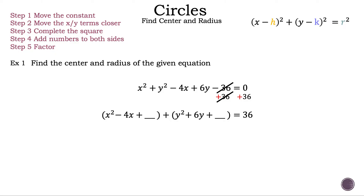Now let's complete the square for our x quadratic. First we need to find the b term, which is negative 4. We need to divide negative 4 by 2 and square it. Negative 4 divided by 2 is negative 2, and negative 2 squared is 4. Now let's add 4 back into our equation. Remember, if we add a 4 to the left-hand side we have to add a 4 to the right-hand side so we keep the equation equal.